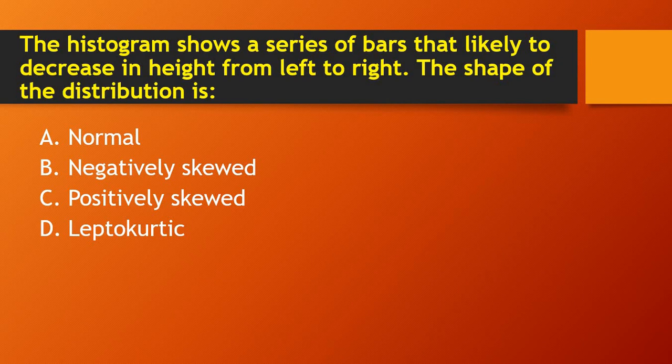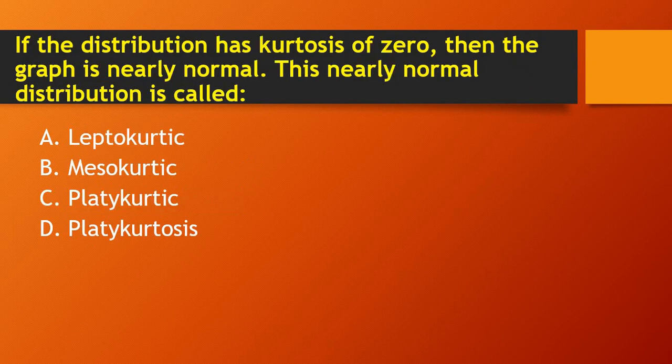Next question: a histogram shows a series of bars that decrease in height from left to right. The shape of the distribution is — normal, negatively skewed, positively skewed, or leptokurtic? The right answer is positively skewed. When bars decrease in height from left to right, the shape of the distribution is positively skewed.